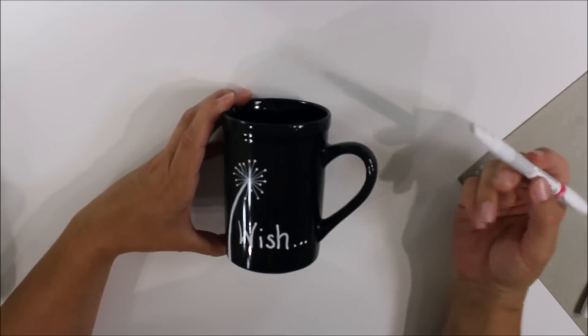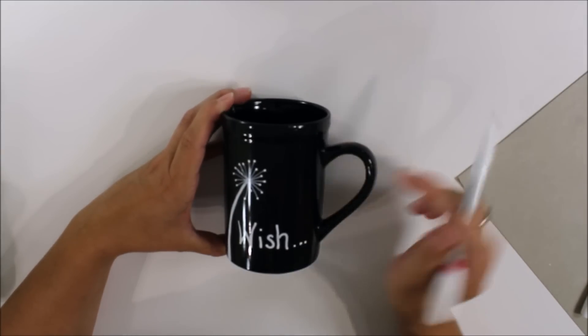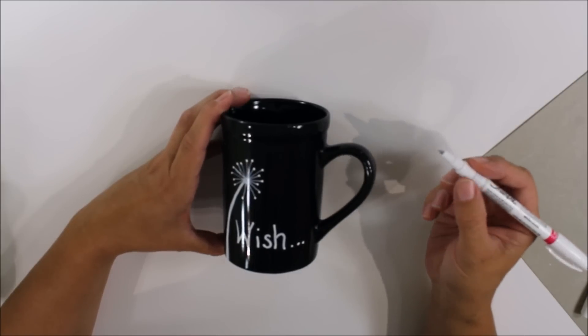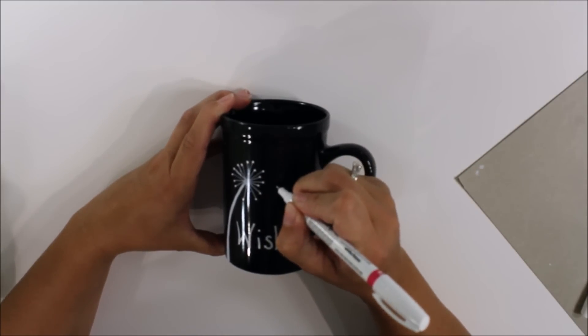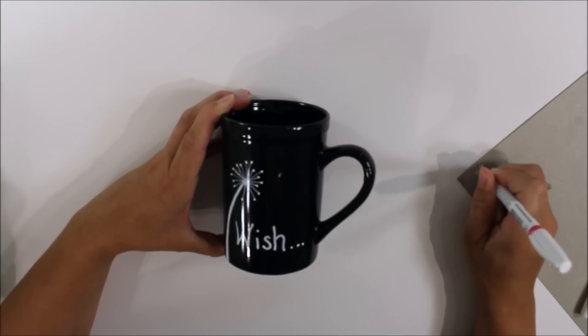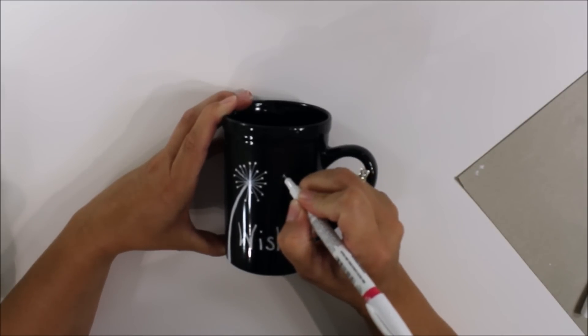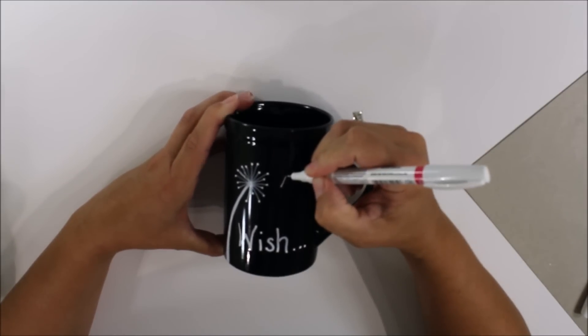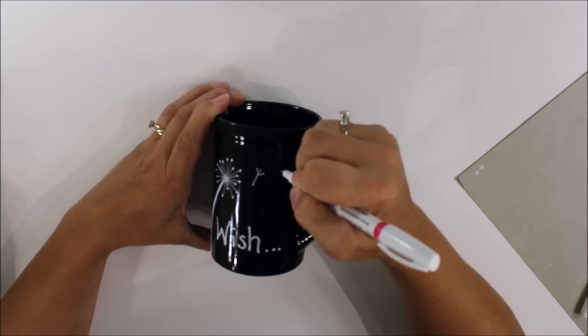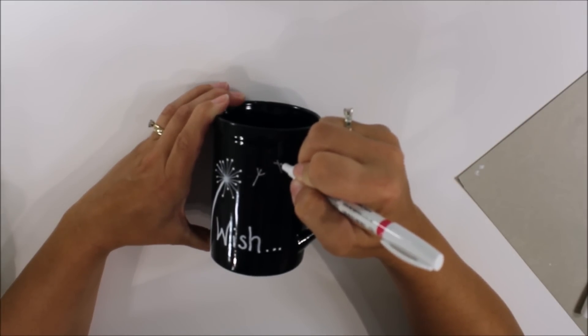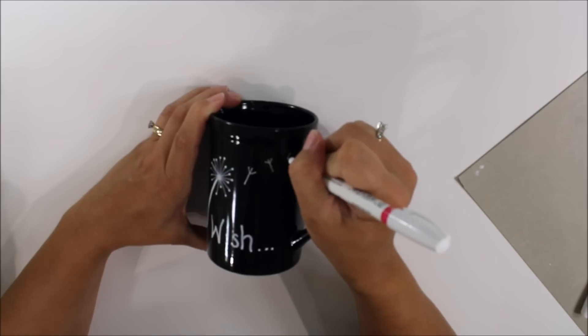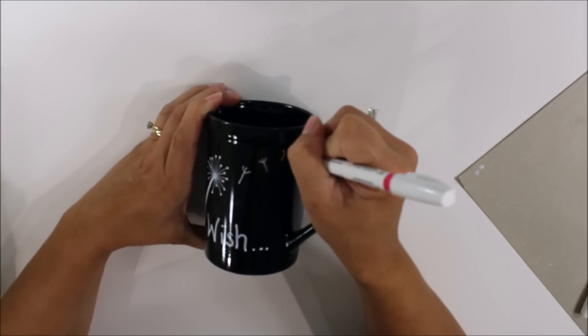And then I want to do a few small little pieces of dandelion, kind of like flying off, and I switch back to my ultra-fine Sharpie marker. And I'm just going to do a single little stem, need to get some more paint back in the tip of that. So I'm going to do a small stem with three little pieces coming off of it, and I'm just going to do another smaller stem with three little pieces coming off. And then up here by the mug handle, I'm going to do an even smaller one with three little pieces coming off.